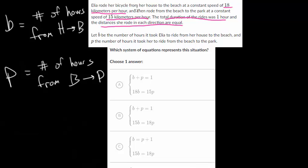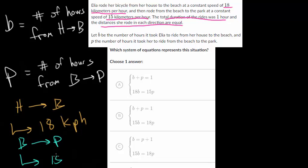When we're going from the house to the beach, she's going at a constant speed of 18 kilometers per hour. I'll use KPH for that. And then when she's going from the beach to the park, she goes a little bit slower, and this is at 15 kilometers per hour.